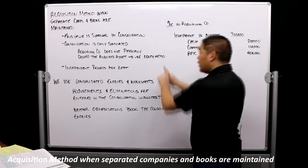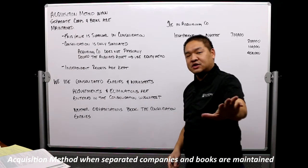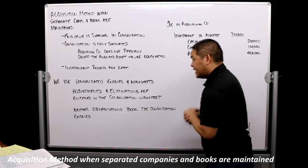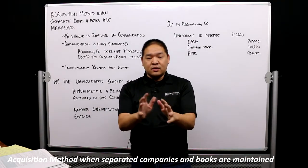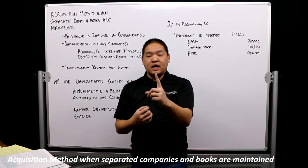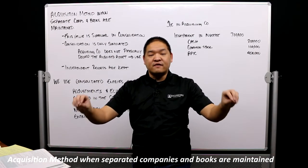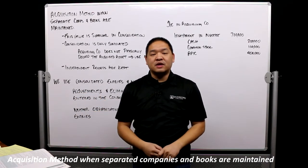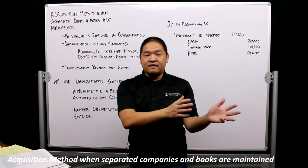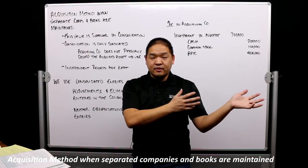Those adjustments and eliminations are entered into the consolidation worksheet only — they are not entered into the books and records of either separate company. Consolidated entries do not hit the books; instead they hit the worksheet. The worksheet has nothing to do with the accounting programs already in place — it's a separate thing. At the end of the year we put all the trial balances from both companies into that worksheet and make adjusting or eliminating entries to arrive at the final financial statement.